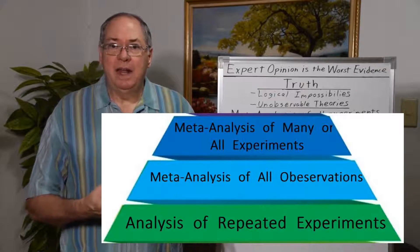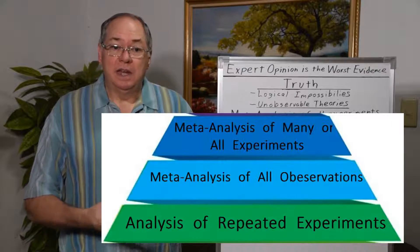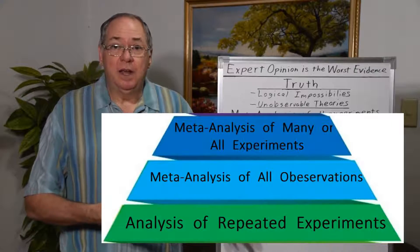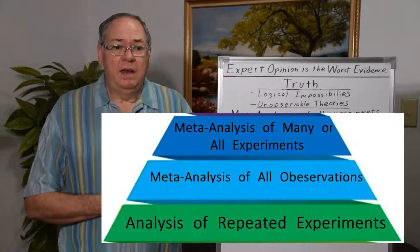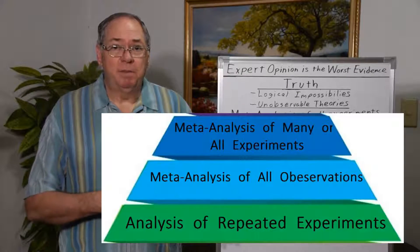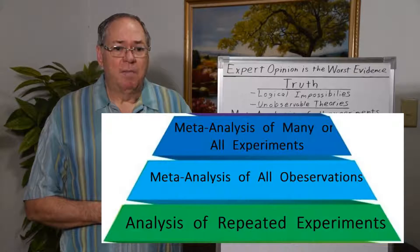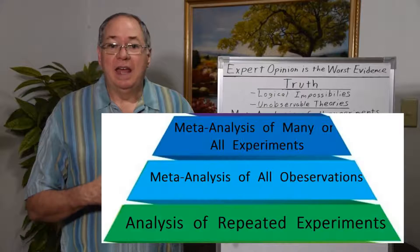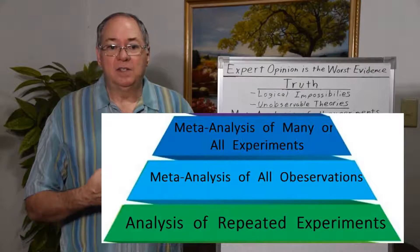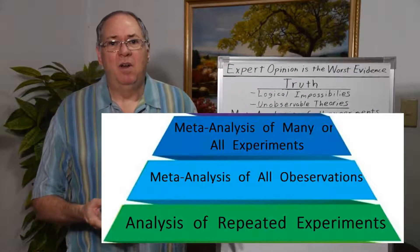Then you can do analysis of a multipoint experiment, say an experiment run repeatedly by an individual or group of people doing the same experiment over and over. Then you can have a meta-analysis of all the observations, which gets you into more certainty than the observations. At the very top, an analysis of multiple experiments and then a meta-analysis of all experiments.